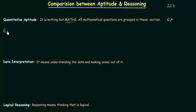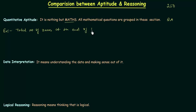Now we will see one example on quantitative aptitude. We have to find out the total number of zeros at the end of 10 factorial. Let's see how to do this — we have one trick for this.